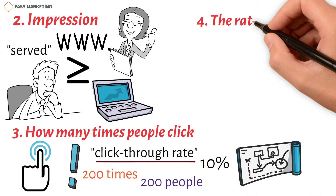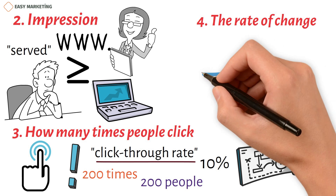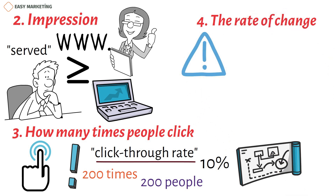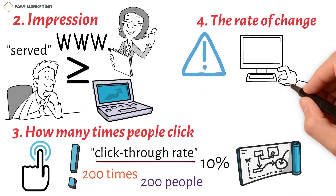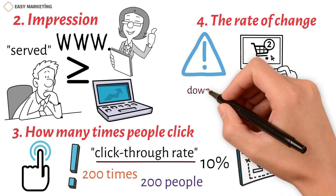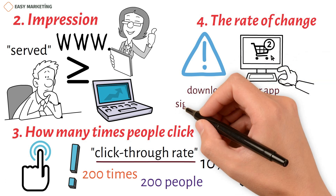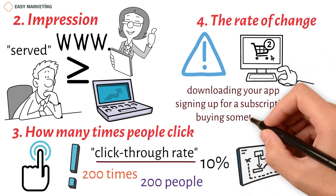Fourth, the conversion rate. This is the most important metric to look at because the whole point of advertising is to get people to buy something. This rate shows how many people who visit your landing page take a certain action, like downloading your app, signing up for a subscription, or buying something.